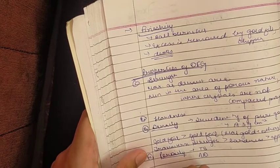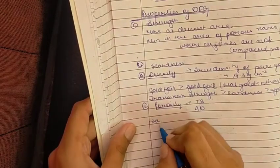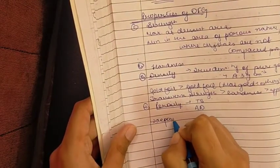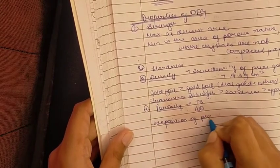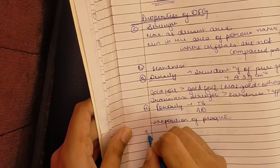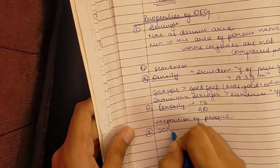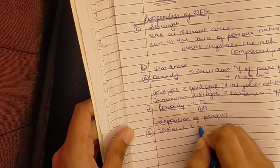It becomes more susceptible to the deposition of plaque if it has porosity. By porosity, I mean it has voids. If it is compacted well, then it won't be susceptible to tarnish and corrosion.